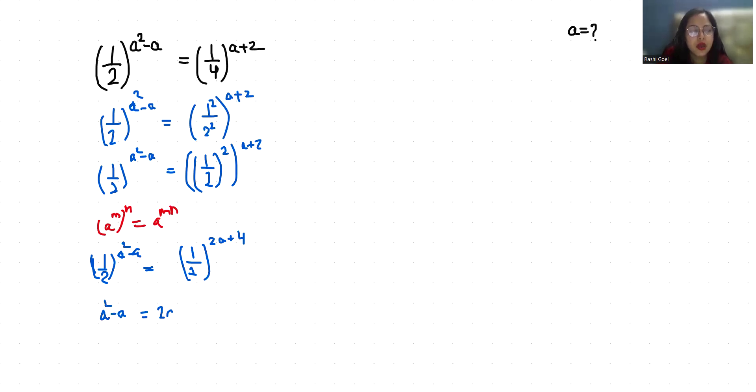So a²-a-2a-4 = 0. So it becomes a²-3a-4 = 0. Now it's like a quadratic equation.